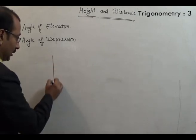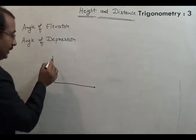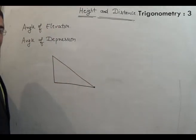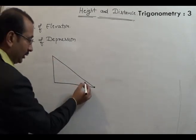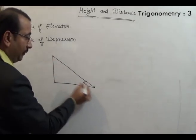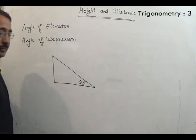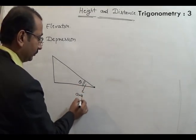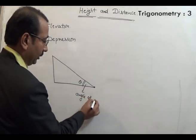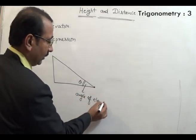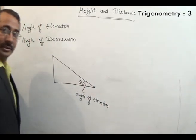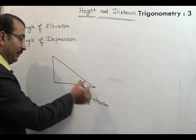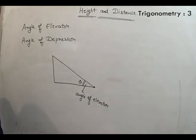When a man is standing at a point and he looks at the top of a building, he finds this angle to be theta degrees. This angle is known as angle of elevation. When a man stands at a base and looks at the top, the angle made by the man with the base is known as angle of elevation.